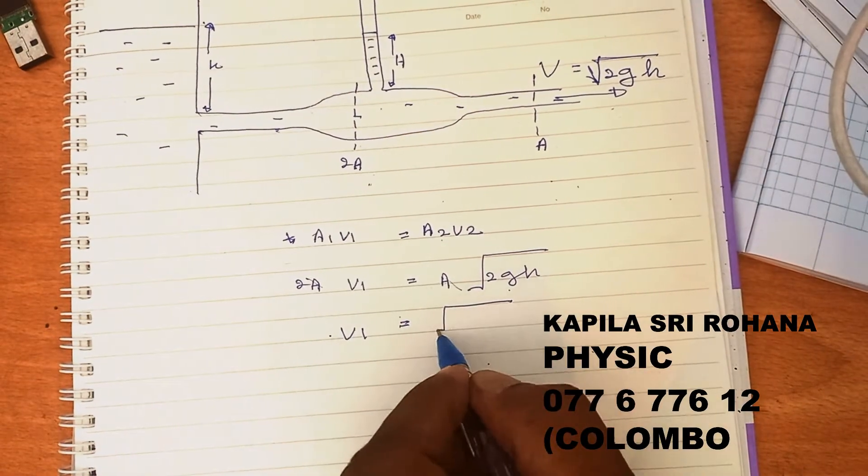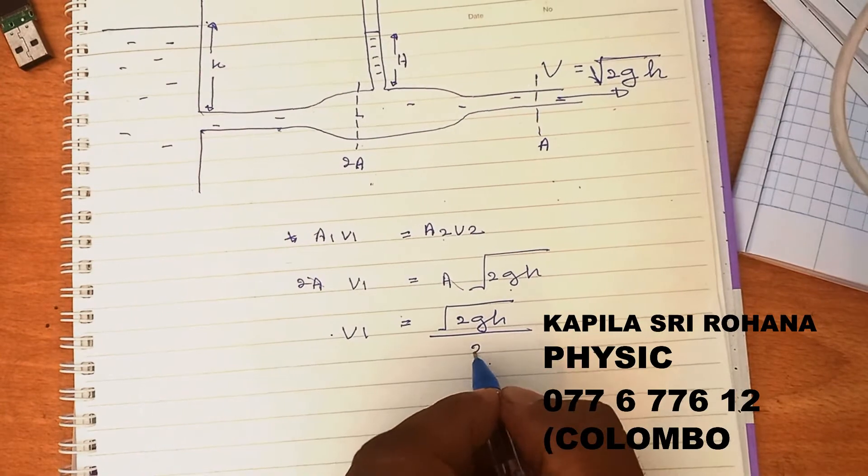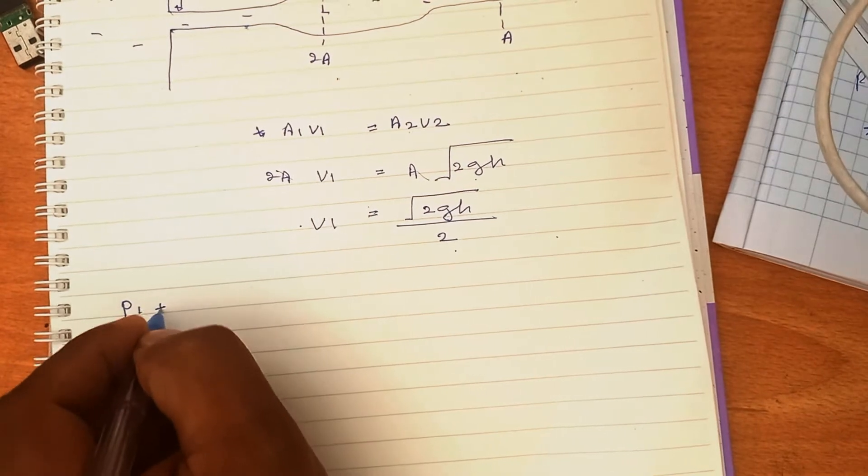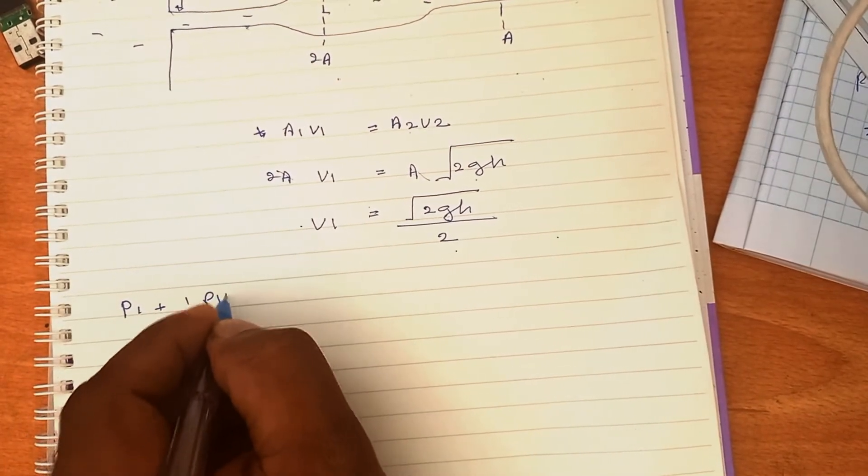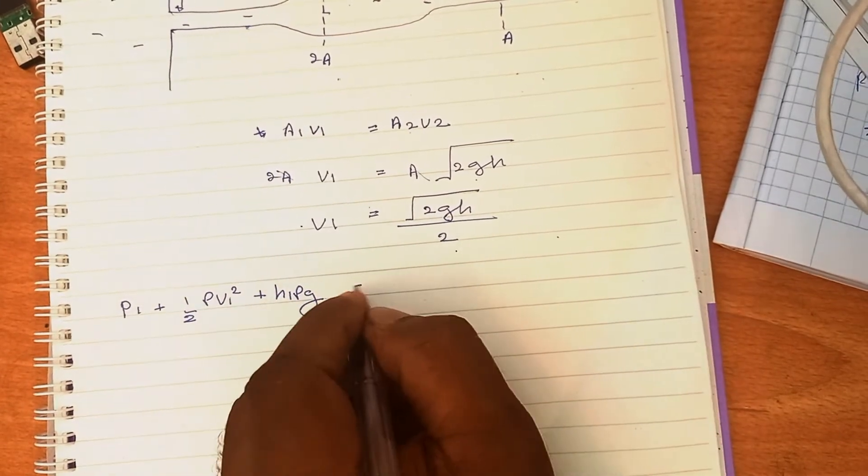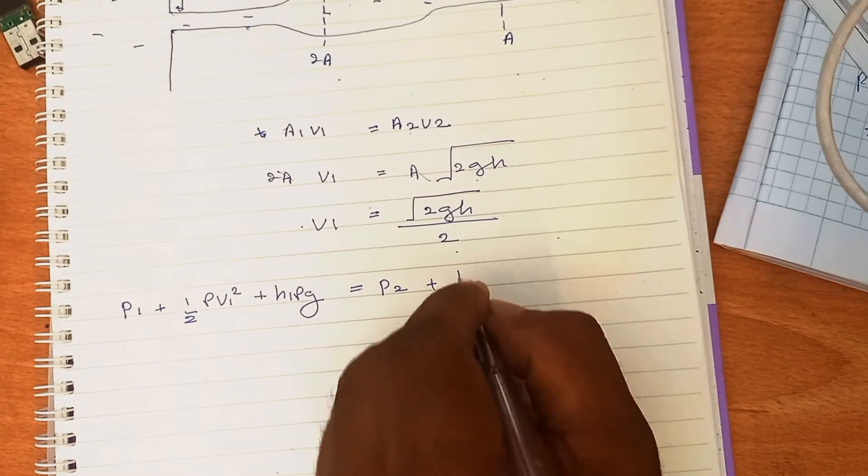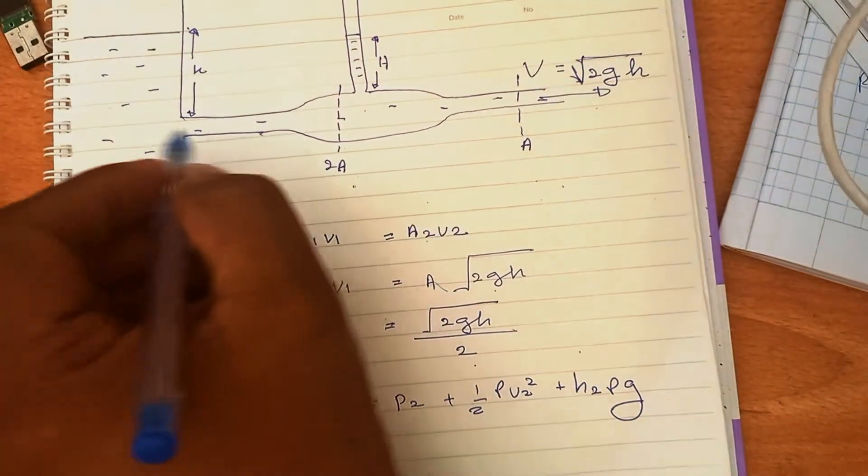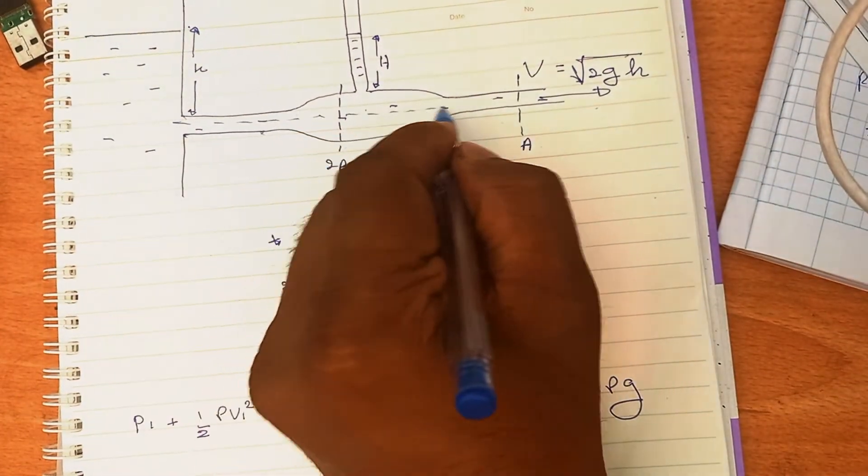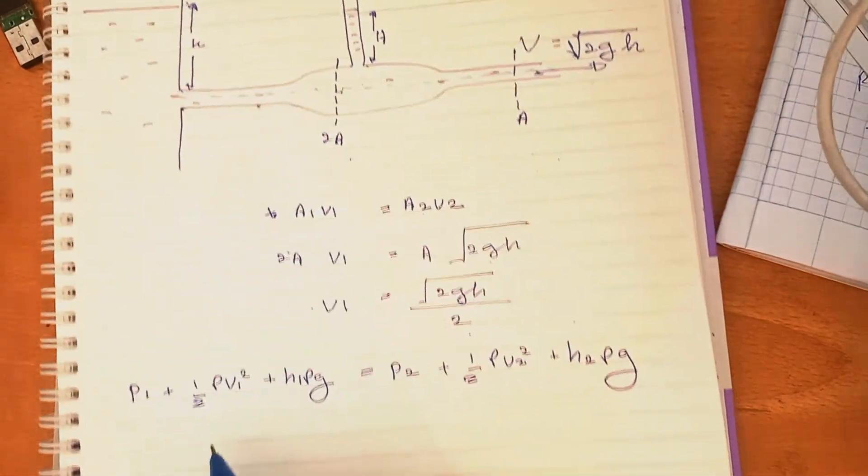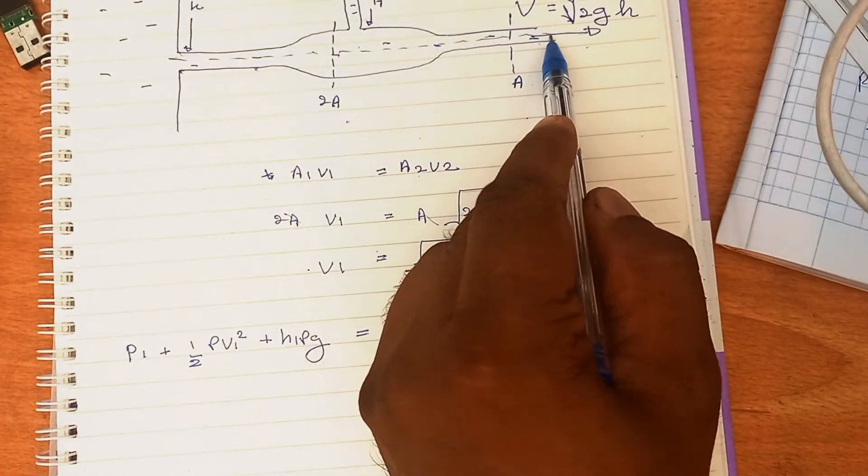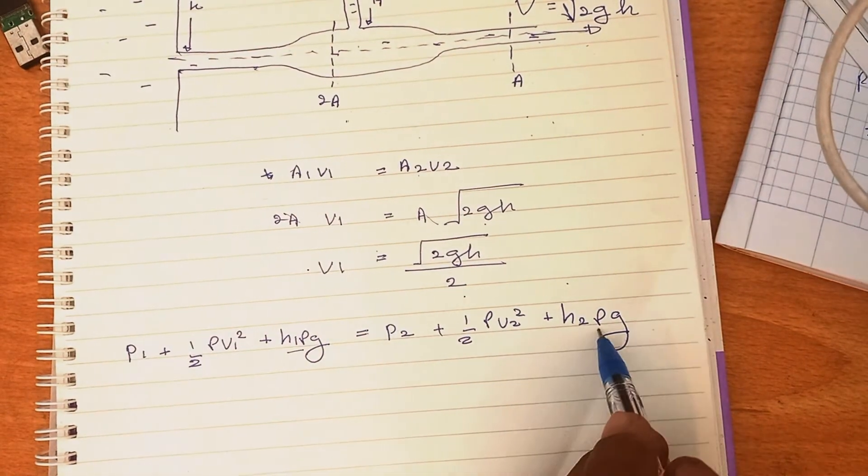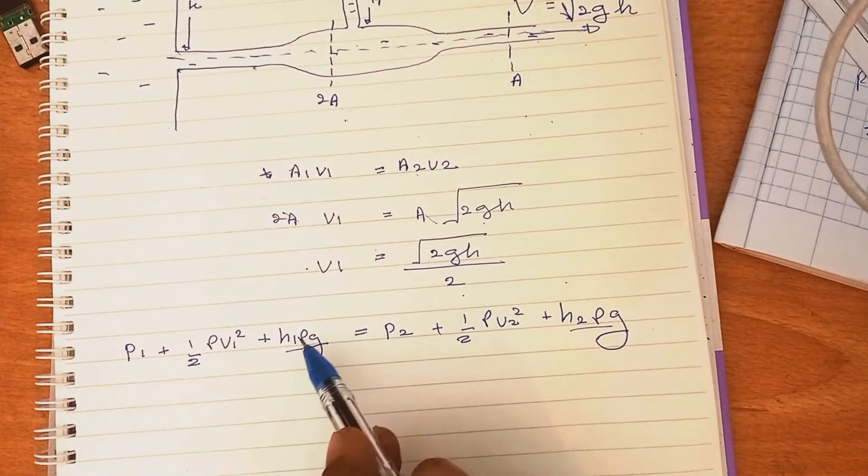Apply Bernoulli's equation again: P₁ + 1/2ρV₁² + h₁ρg = P₂ + 1/2ρV₂² + h₂ρg. This is a horizontal line. I'm going to apply Bernoulli's expression from here to here on a horizontal line. In a horizontal line, nothing happens to the potential energy: h₁ρg = h₂ρg, so these two can be cancelled.